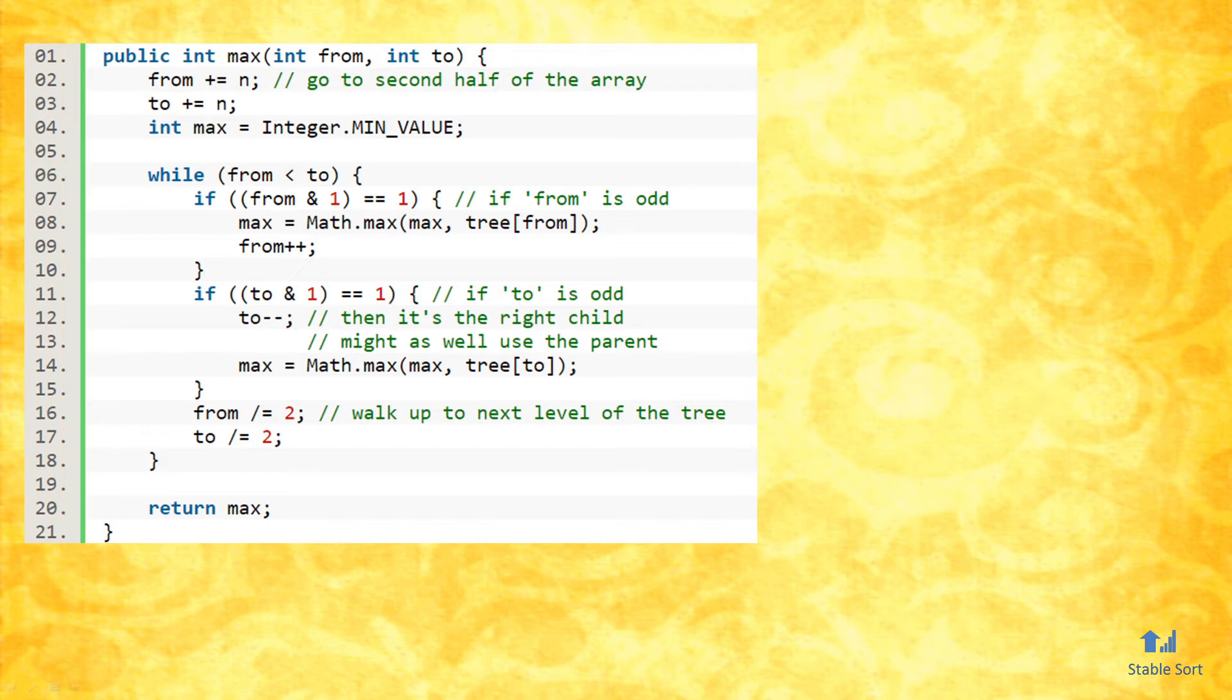Going back to the source code, the function that finds the max is also fairly straightforward. As we saw earlier, the bottom layer of the tree is at the right end of the array, and subsequent layers are stored closer and closer to the left end of the array. So the first thing that the function does is it shifts the from and to variables to the right to match the bottom tree layer. By the way, in this implementation, from is assumed to be inclusive, while to is exclusive.